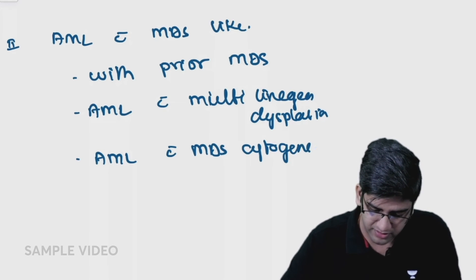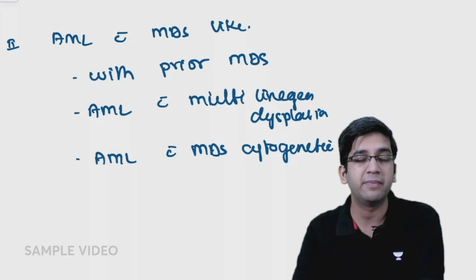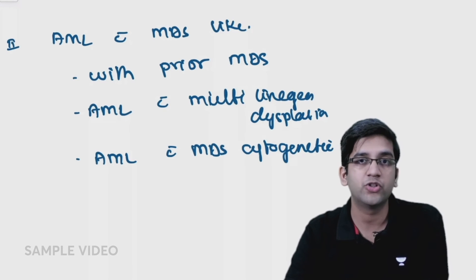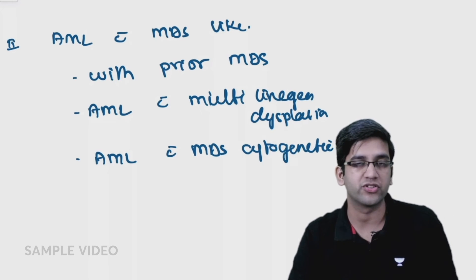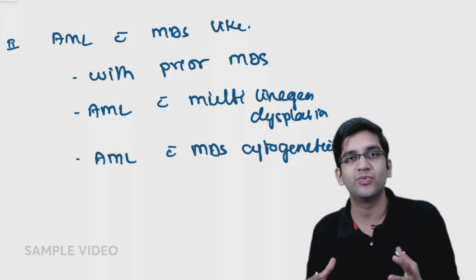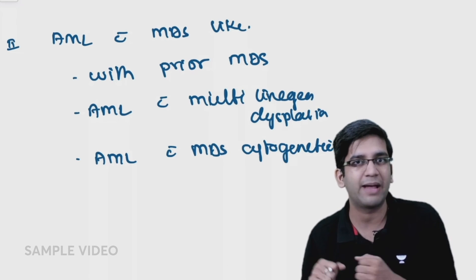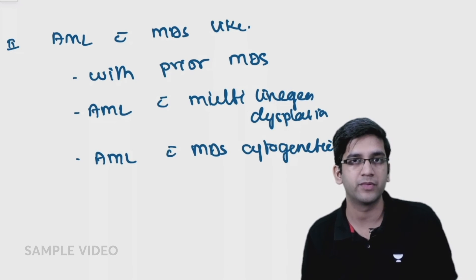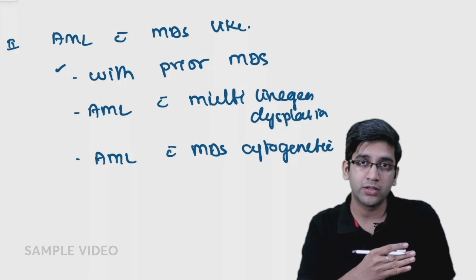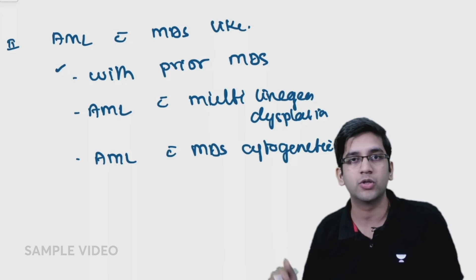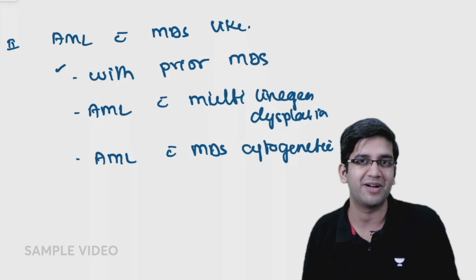Third one, AML with MDS cytogenetics - when I do cytogenetic analysis, the cytogenetics looks like a patient with MDS but clinically looks like AML. I want you to analyze them and go to prognosis. If one tumor progressed to another tumor, good or bad? Obviously bad.